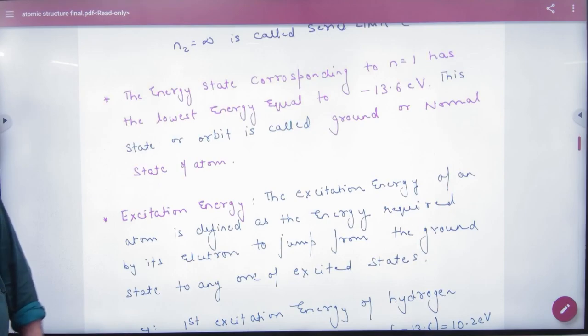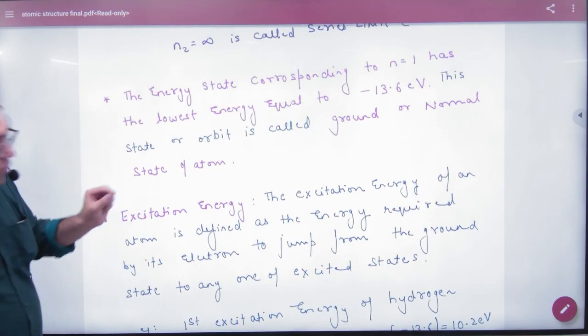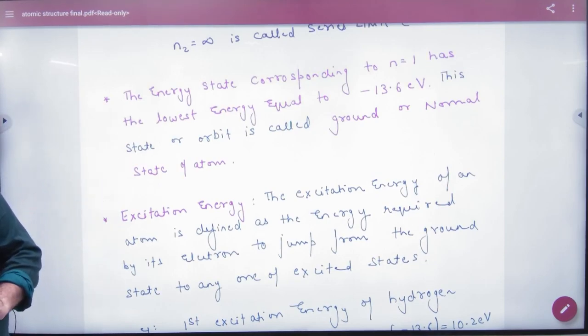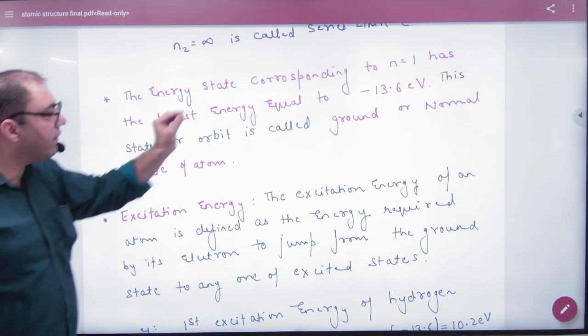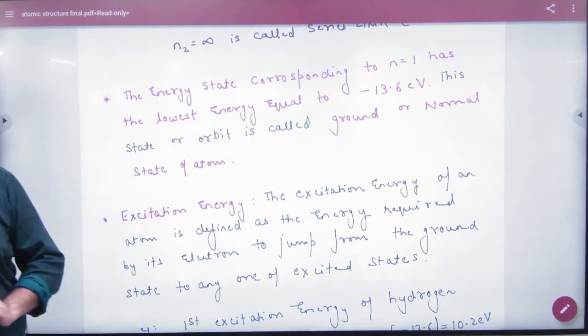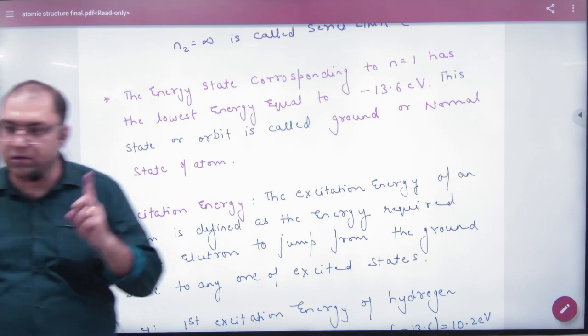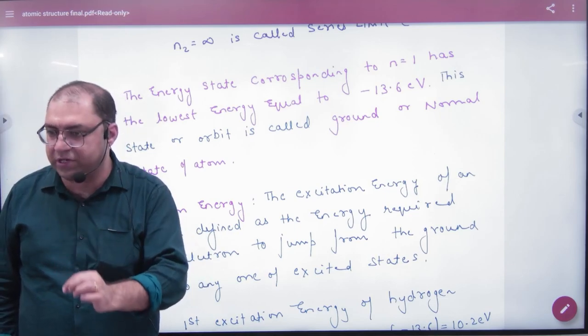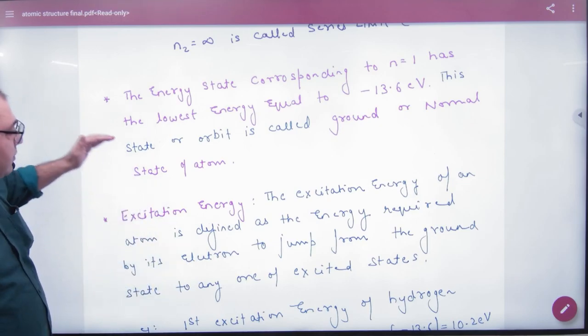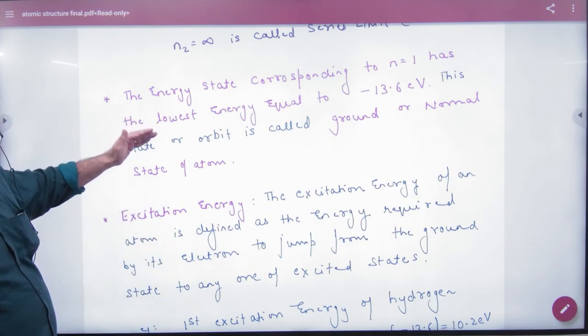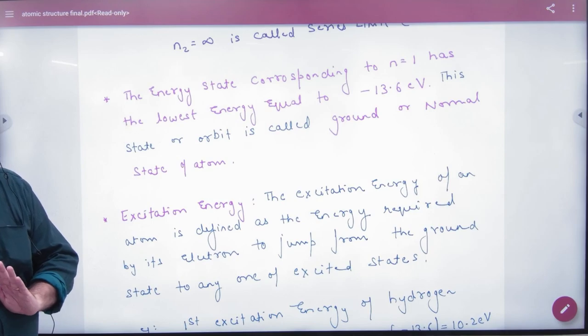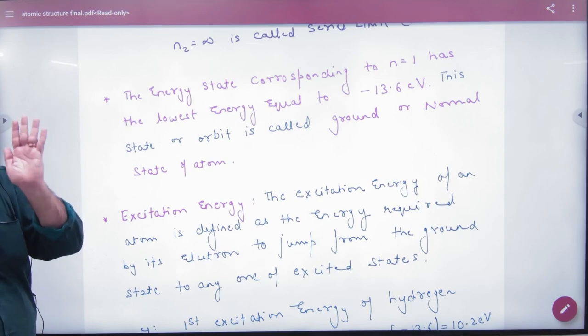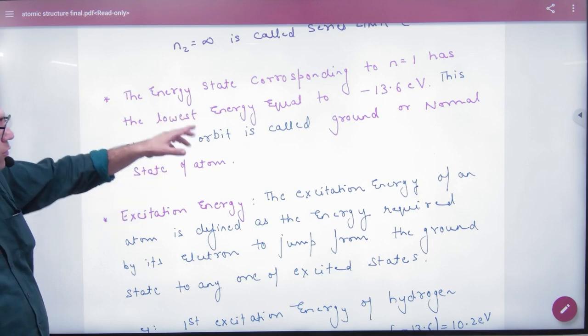Energy state corresponding to n equals 1 has the lowest energy equal to minus 13.6 electron volts. When n equals 1, it will be minus 13.6 eV. This state or orbit is called ground or normal state of atom. Energy in normal or ground state for electron in hydrogen is minus 13.6 electron volts.